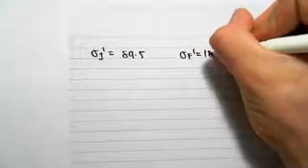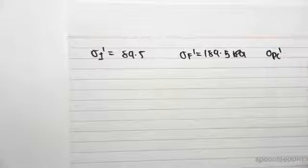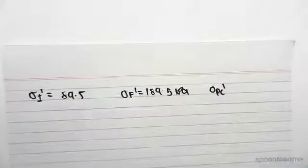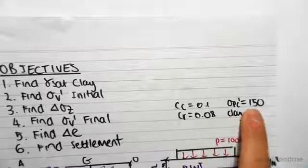The final effective stress is 189.5 kPa. And the other important information we need to know is the pre-consolidated stress, which is given to us in the question. So the pre-consolidated stress in the layer of clay is 150 kPa.